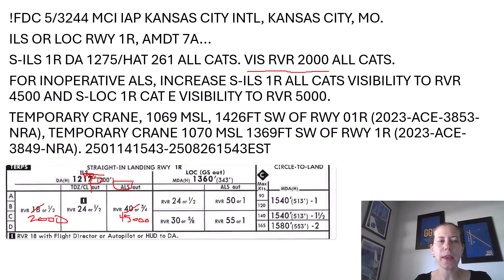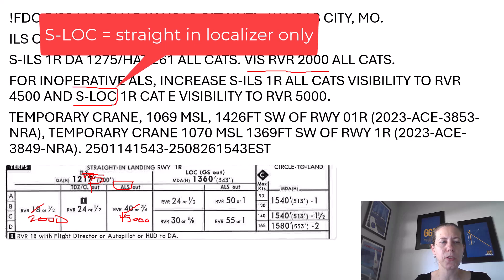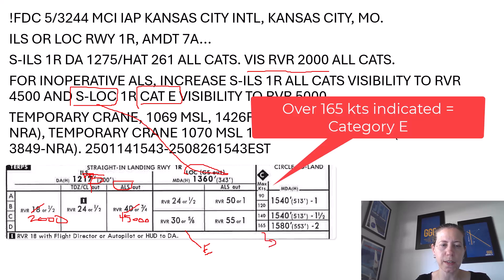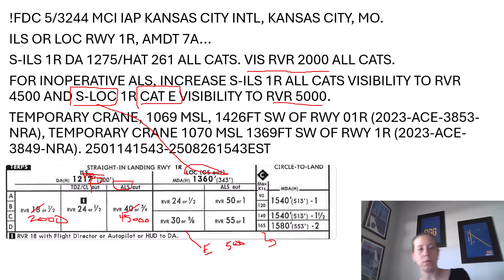Also, if my glide slope were not working, then I would be using the straight-in localizer only — over on that side of the chart for Runway 1 Right. Then the NOTAM says Category E visibility would go up to RVR 5,000. So you would have an extra box here if your aircraft is very fast — Jeppesen doesn't list it, but it's basically anything over 165 knots — making my RVR 5,000 feet.